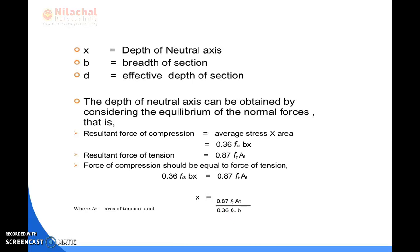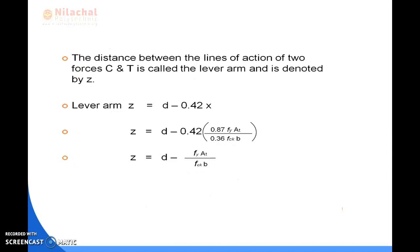Where Ast is the area of tension reinforcement. The distance between the lines of action of the two forces C and T is called the lever arm, denoted by Z. The lever arm Z = d − 0.42 × (0.87Fy × Ast / (0.36FCK × b)), or equivalently Z = d − 0.42x, which can also be written as Z = d − 0.4Fy × Ast / (FCK × b).